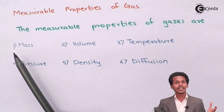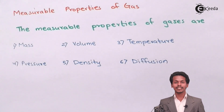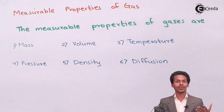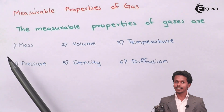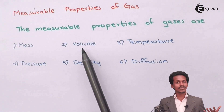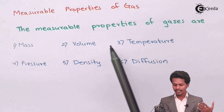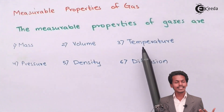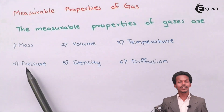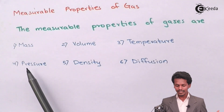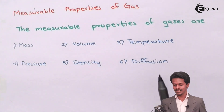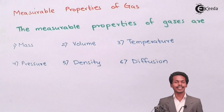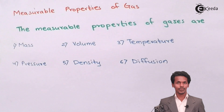The first property is mass. Mass is something which we can calculate for solid as well as liquid, and we could calculate it for gases also. The next one is volume. The next is temperature. The fourth is pressure. Fifth is density. And the last is diffusion, and this diffusion is related to gases only.